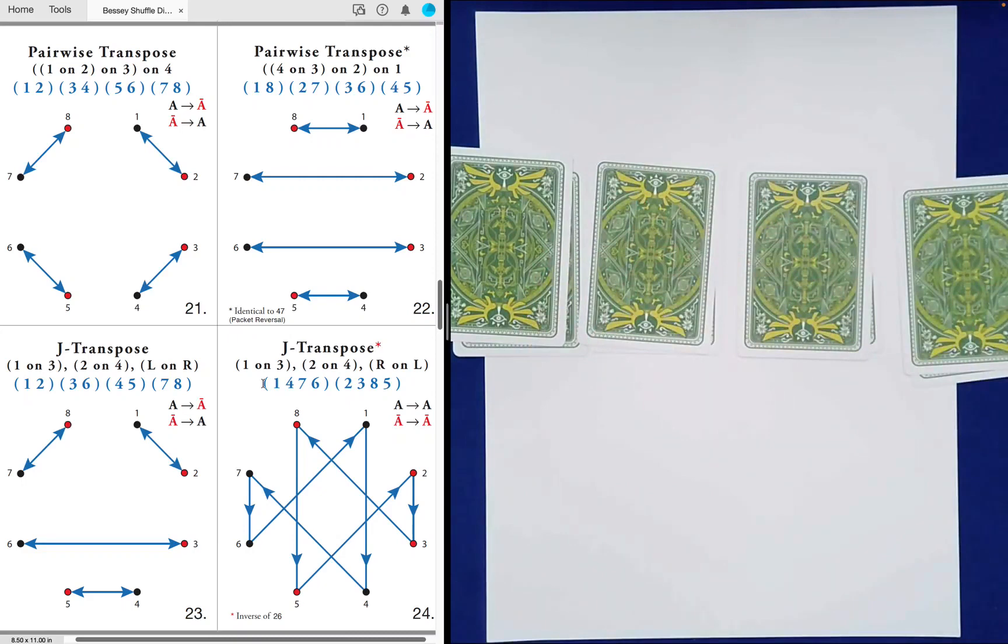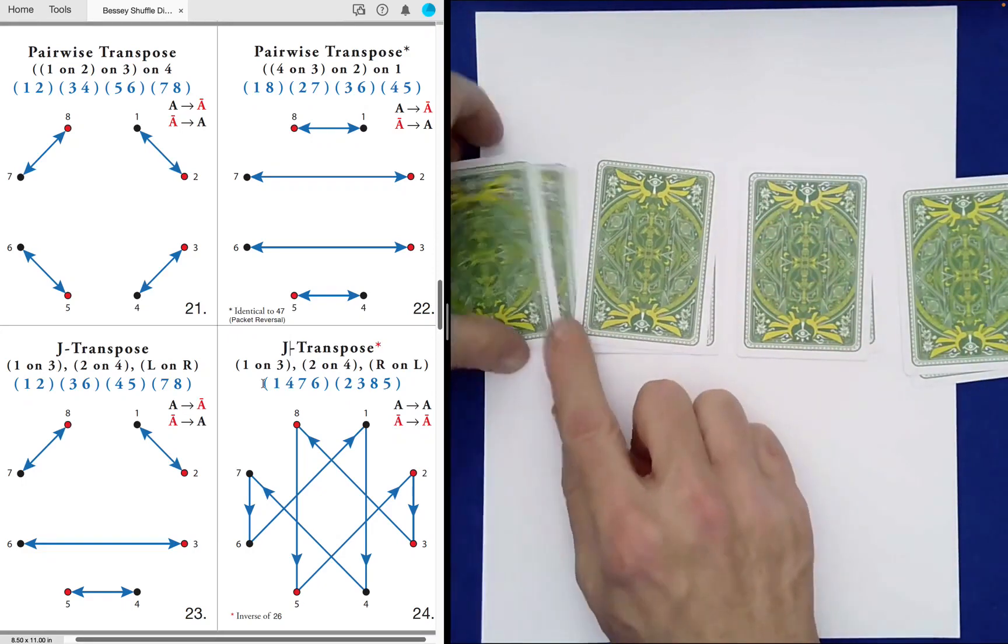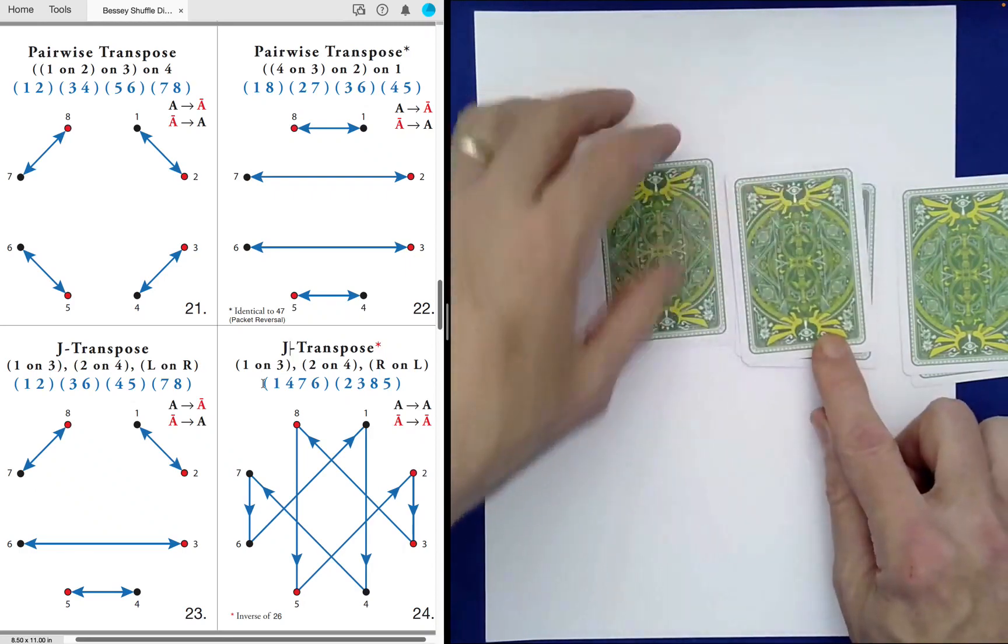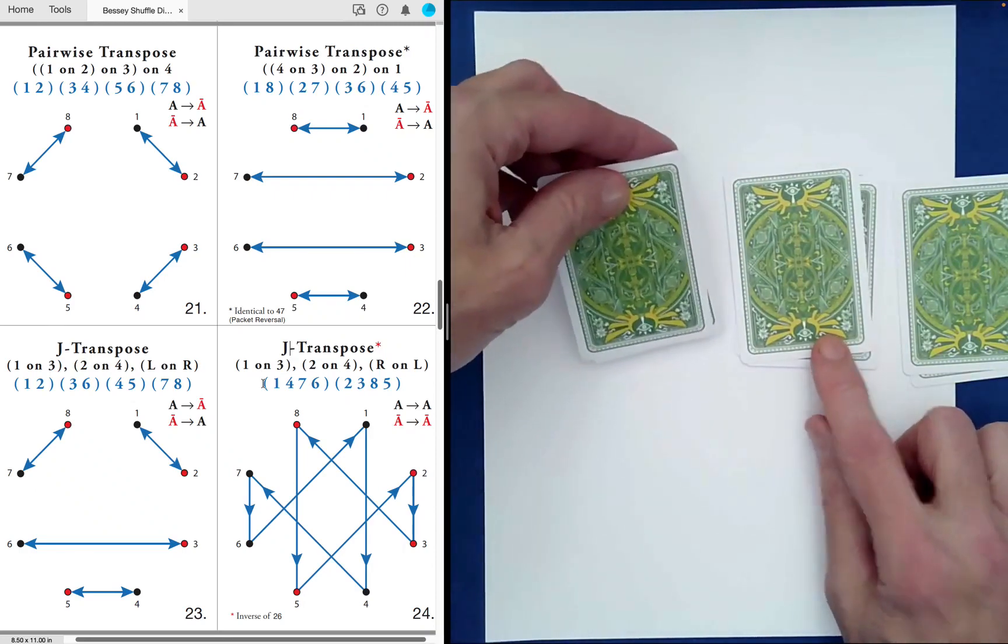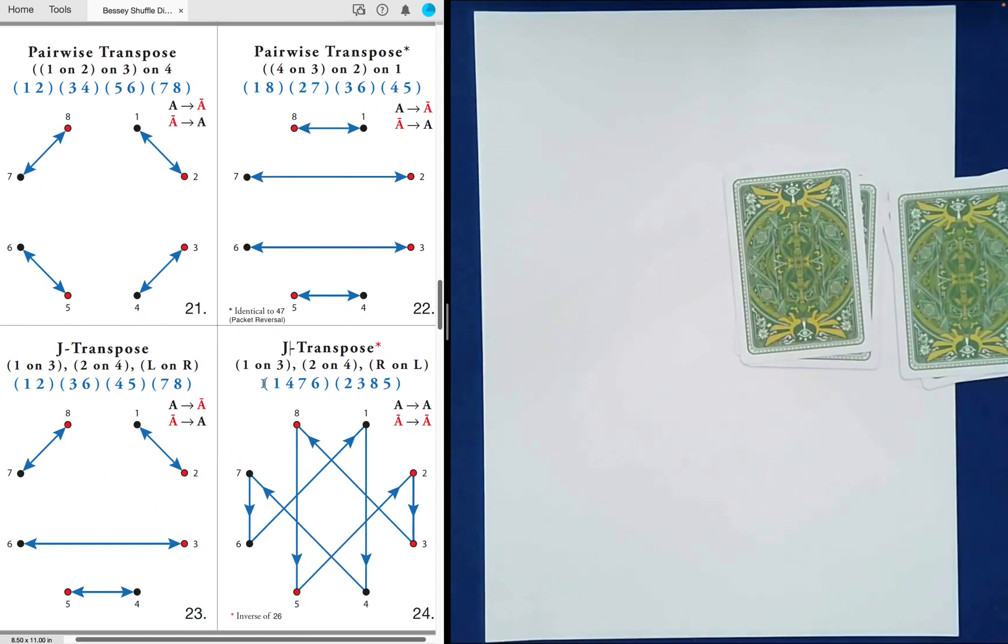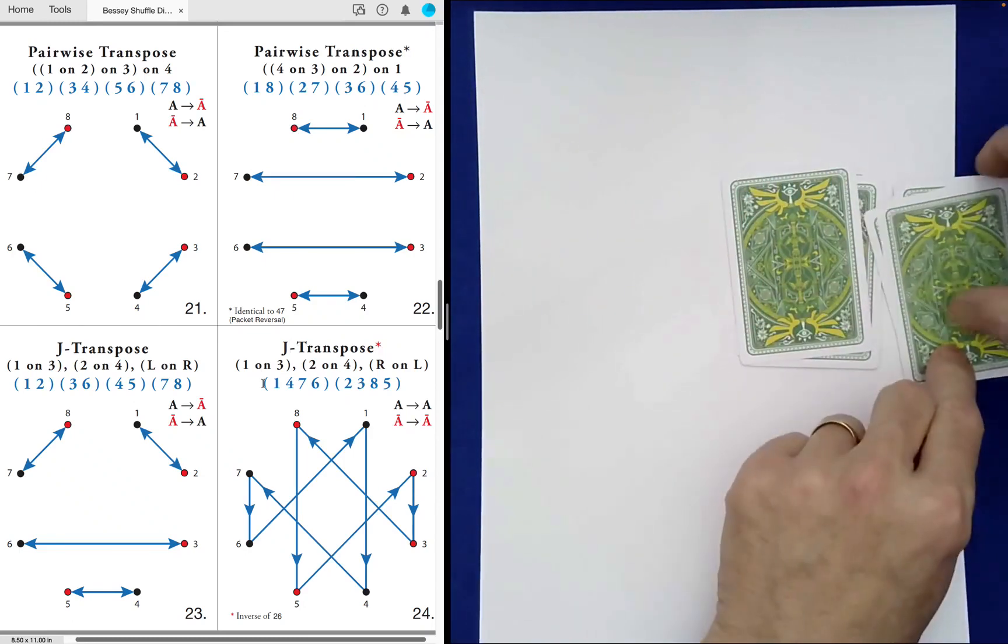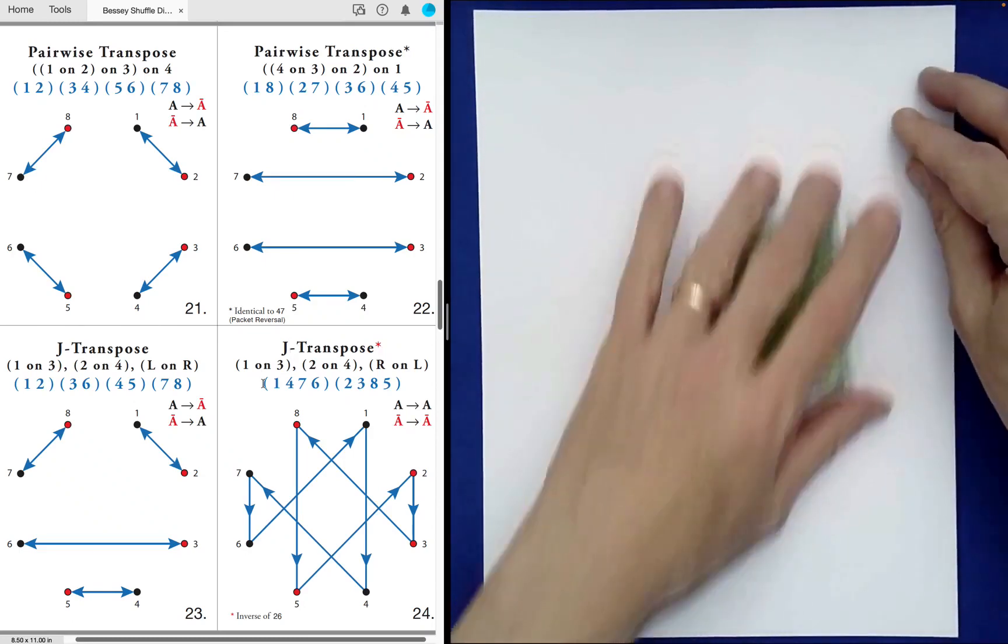And now the stacking for shuffle 24 is the leapfrog. So we leap over its neighbor, one on top of three. Leap over its neighbor, two on top of four. But this time we're stacking the right pile on top of the left.